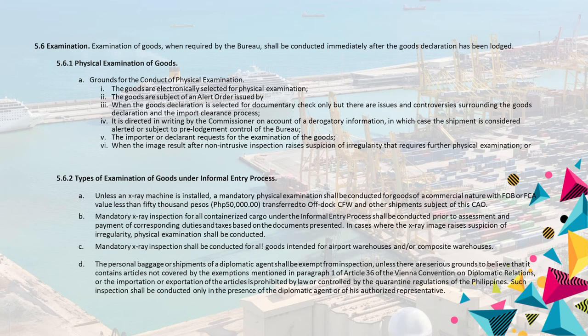5.6.1 Physical Examination of Goods. A. Grounds for the Conduct of Physical Examination: 1. The goods are electronically selected for physical examination. 2. The goods are subject of an alert order issued by the competent authority. 3. When the goods declaration is selected for documentary check only but there are issues and controversies surrounding the goods declaration and the import clearance process. 4. It is directed in writing by the commissioner on account of a derogatory information, in which case the shipment is considered alerted or subject to pre-lodgement control of the Bureau. 5. The importer or declarant requests for the examination of the goods. 6. When the image result after non-intrusive inspection raises suspicion of irregularity that requires further physical examination.